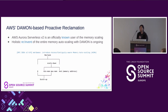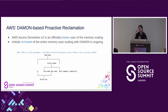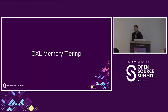AWS Aurora Serverless v2 is the popular service officially known to use DAMON-based proactive reclamation for this purpose. We are currently working on reinventing and redesigning the entire memory auto-scaling approach based on DAMON, because the current implementation uses complicated kernel features from user space in a way that is not ideally efficient.